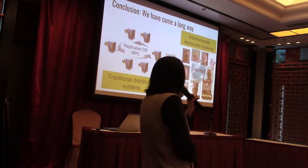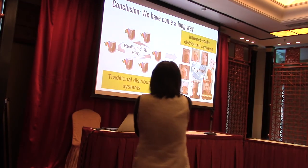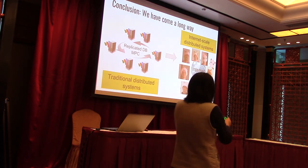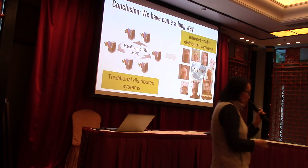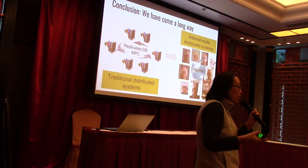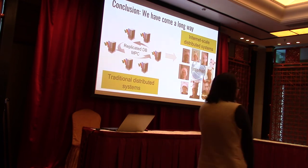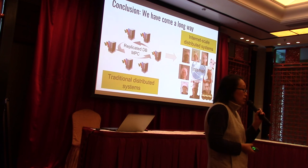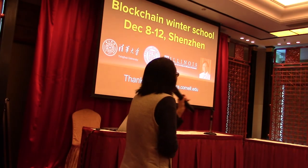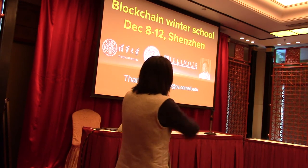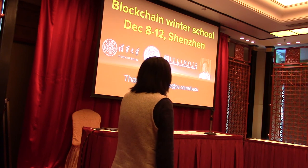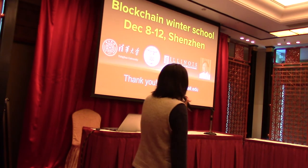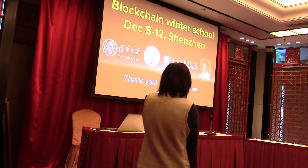To conclude, we have come a very long way — from classical distributed systems within organizations like Google and Facebook, to this exciting new world where we want to build internet-scale distributed systems and trade with people we don't know on the internet. There are so many exciting open problems, and our scientific understanding of distributed consensus at this large scale is fairly limited. We also have an exciting event following Asiacrypt 2017 in Shenzhen, generously sponsored by Andy Yao and Tsinghua, and co-organized by Tsinghua, Cornell, and Illinois. Thanks.